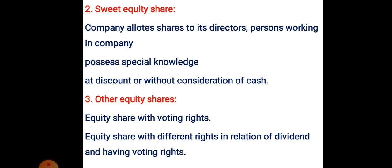If the rate of dividend is fixed in other equity shares, it may resemble preference shares, but along with voting rights, that is why it is called other equity shares — they have special voting rights and different rights in relation to dividend, making them different from preference shares. So these were the three types of equity shares.